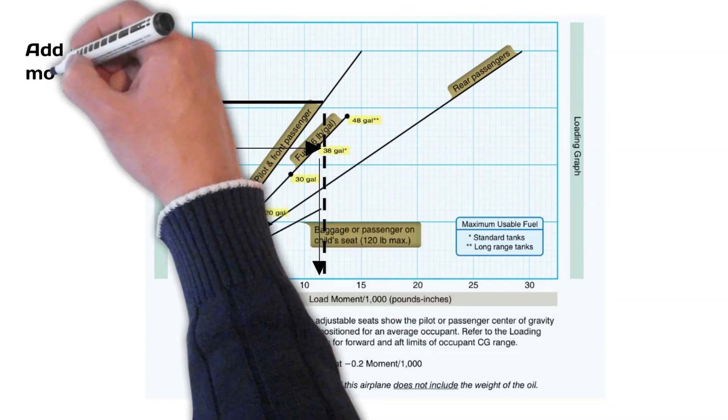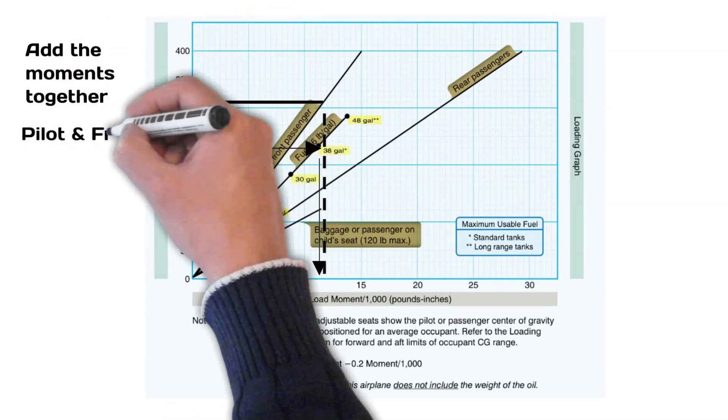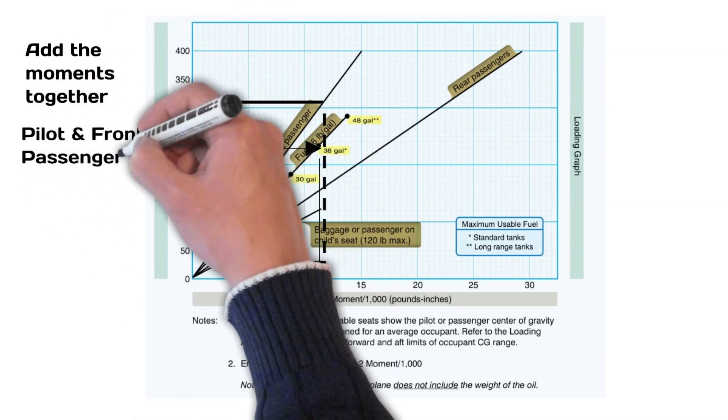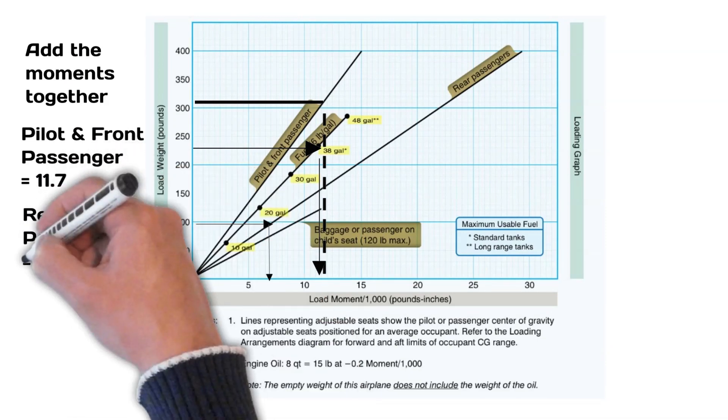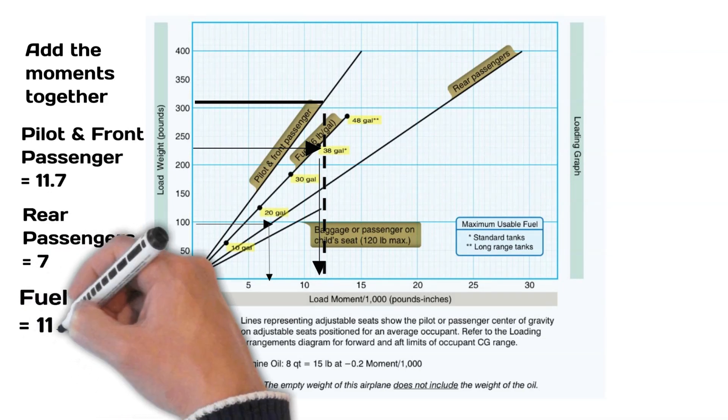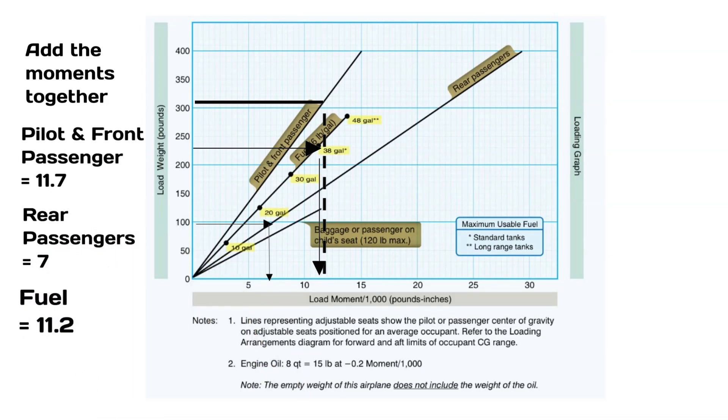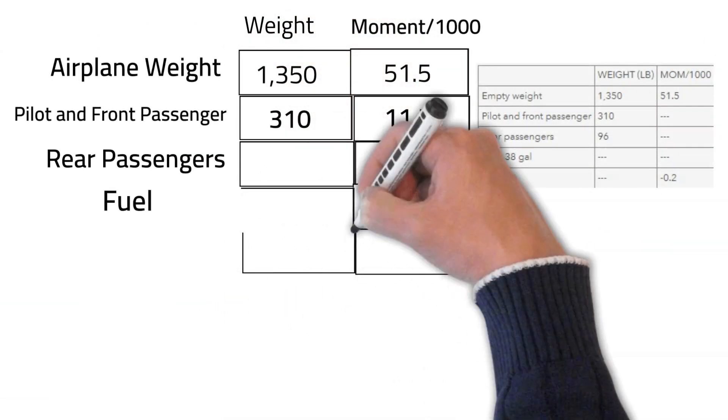Repeat the same process for all the other weights. The moment divided by 1,000 for the rear passengers is 7 and the moment for the fuel is 11.2 to be exact. It can sometimes be difficult to find the exact figures on the weight and balance tables, so try to get as close as possible, but sometimes you can round up or down slightly and still get very close to the right answer.